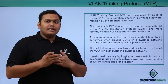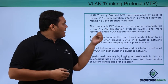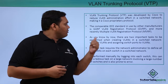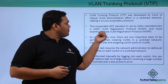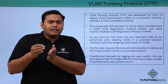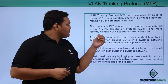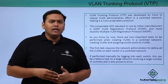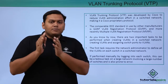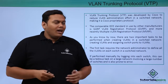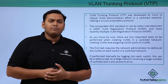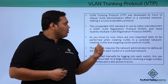There is also a protocol developed by the IEEE standard called GARP VLAN Registration Protocol, or GVRP. More recently, they introduced Multiple VLAN Registration Protocol, or MVRP. These are open standard versions comparable to the IEEE standard, whereas VTP is specifically proprietary to Cisco.